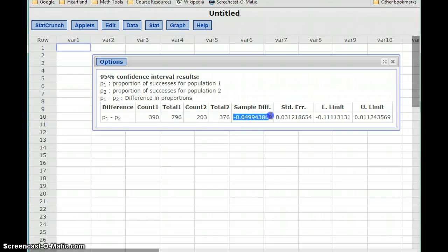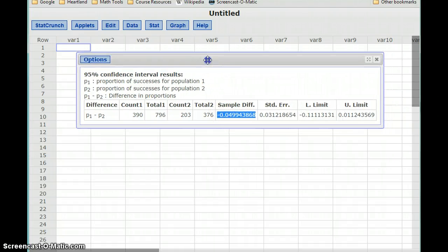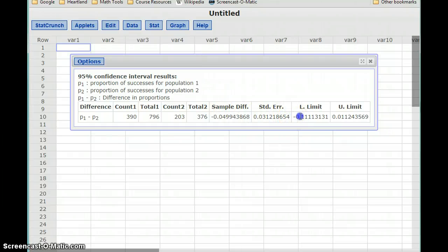So again, we're going to calculate that sample difference. According to the sample results, we're getting a negative value, which means that the proportion of whites who agree with this statement is a little bit smaller. But we're going to base those conclusions off our confidence interval, the lower and upper limit.